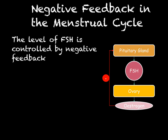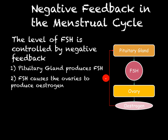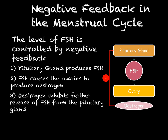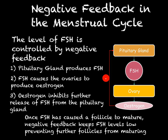Throughout the menstrual cycle we have seen examples of negative feedback, where the levels of different hormones in the blood are controlled by the levels of other hormones. For example, FSH is controlled by negative feedback: the pituitary gland produces FSH, which stimulates the ovaries to produce oestrogen. Once oestrogen reaches a high level, oestrogen itself turns off the pituitary gland's production of FSH. After FSH has caused the follicle to mature, negative feedback keeps FSH levels low, ensuring no more follicles mature — this prevents multiple pregnancies from occurring at the same time.